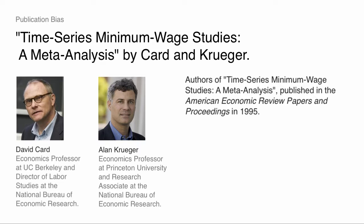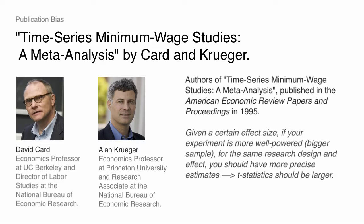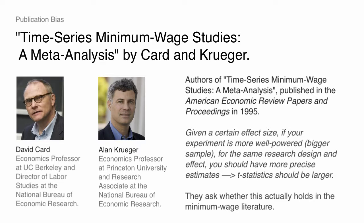What should the distribution of p-values look like? We're going to get into this with Card and Krueger. Card and Krueger's paper is a meta-analysis — a study of publication bias in the minimum wage literature. The basic idea we'll come to with Card and Krueger is: given a certain effect size, if you're really well powered — so you have a bigger sample for the same research design — and the same effect, you should have more precise estimates; therefore t-statistics should be larger. That's a pretty simple idea and that's going to be the starting point of Card and Krueger's paper. They're going to ask whether this actually holds in a literature with 15 to 20 studies by the time they do their review in the mid-90s — a decent body of literature on a very important policy question.